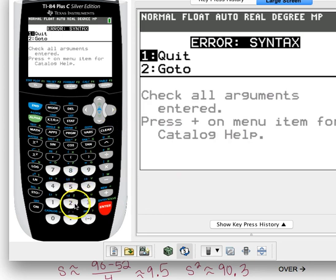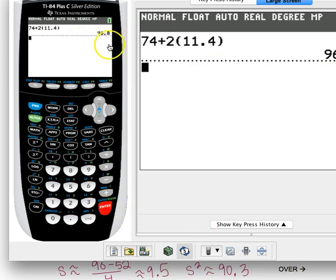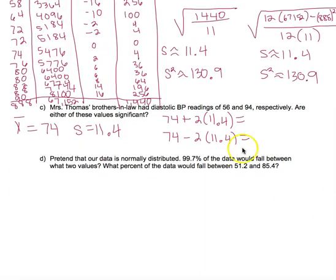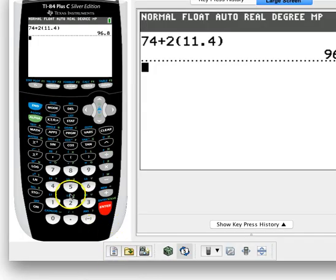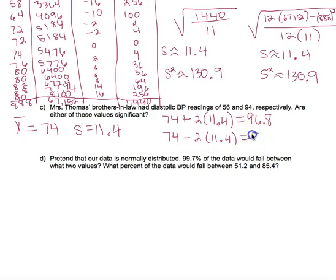I calculate 74 plus two standard deviations: 74 + 2(11.4) = 96.8, which is the upper threshold. Any value above 96.8 would be considered significantly high. Then I calculate 74 minus two standard deviations: 74 − 2(11.4) = 51.2, which is the lower threshold. Any value below 51.2 would be significantly low.